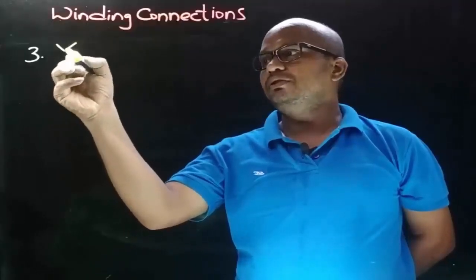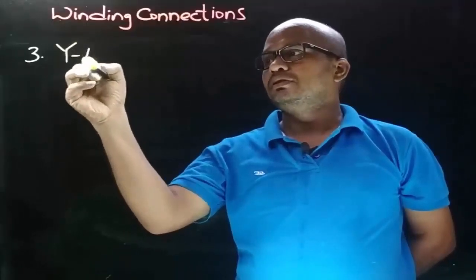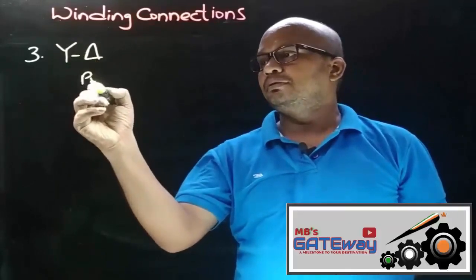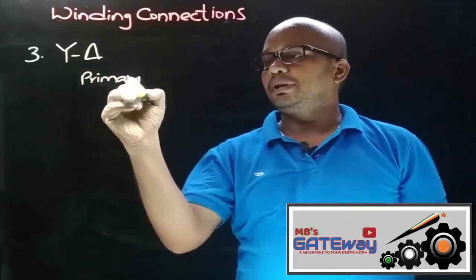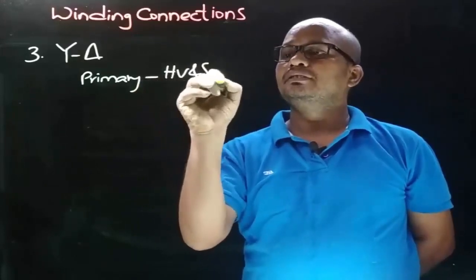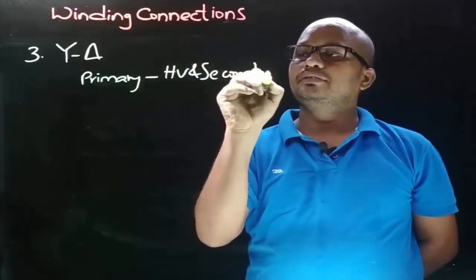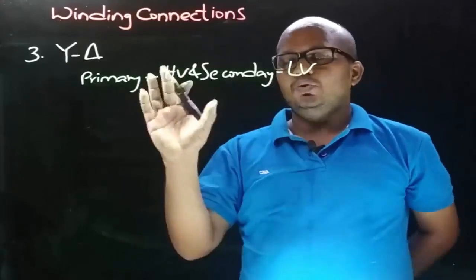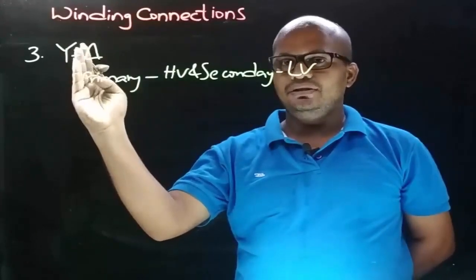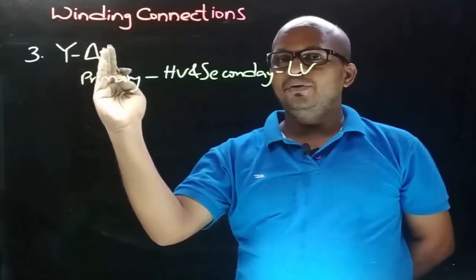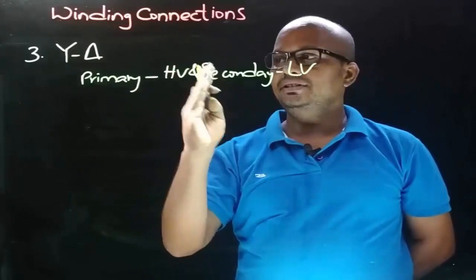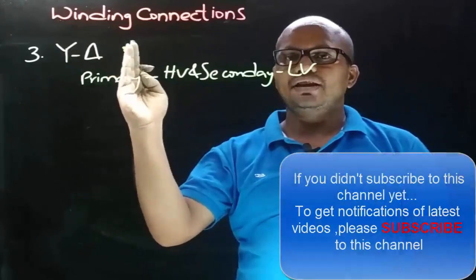Now let's have the discussion on star-delta connection. The assumption is that the primary side is HV and secondary side is LV, which means that on the primary side the connection is star connection having high voltage winding, and delta is the secondary side winding connection having LV winding.